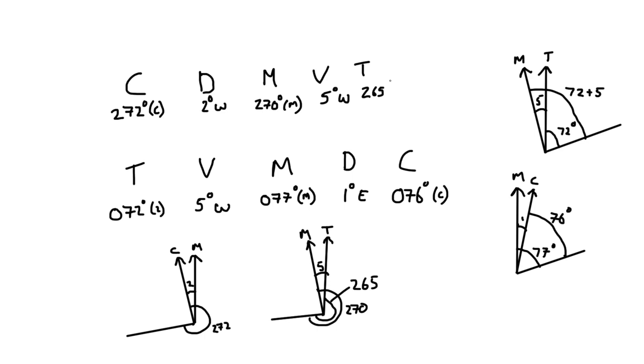And we can just confirm all that with the mnemonics. So you remember deviation west compass best. So compass is higher than magnetic. So we've done it the right way around. Likewise, variation west magnetic best. So again, we've applied it the right way around. But because we did these diagrams, we didn't need to remember any of those mnemonics.